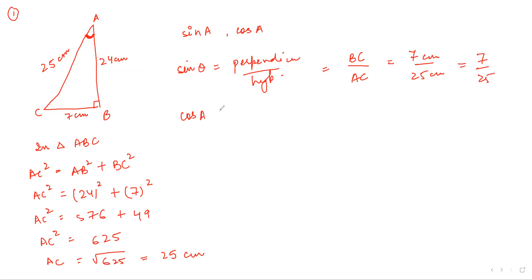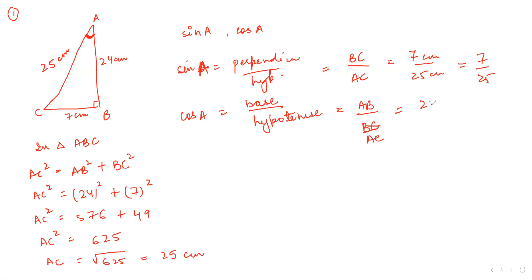Similarly, write cos A. Cos is base upon hypotenuse. What is the base here for angle A? AB is 24 centimeters and AC is 25 centimeters. They cannot be divided further, so cos A is 24 by 25.